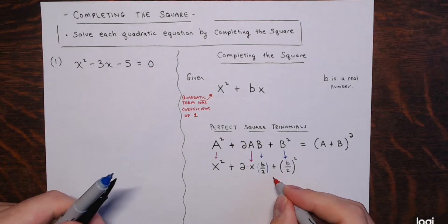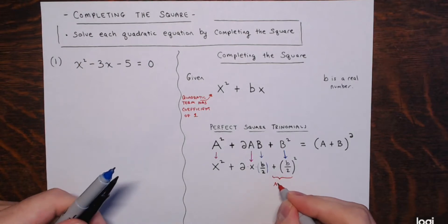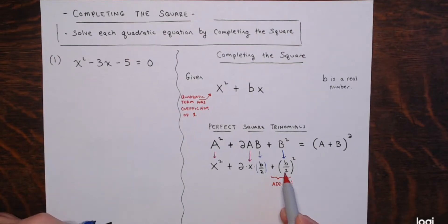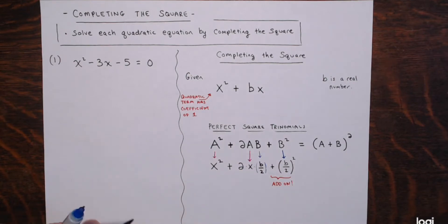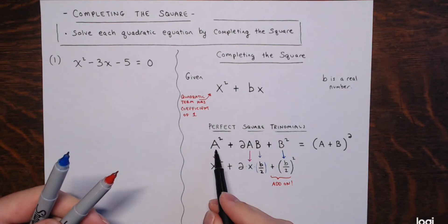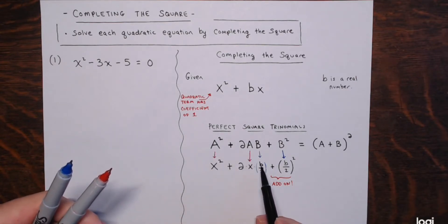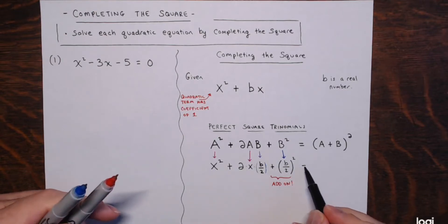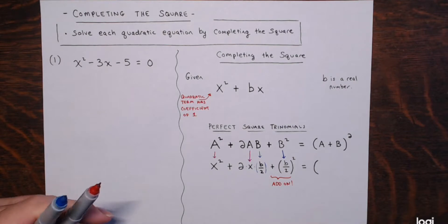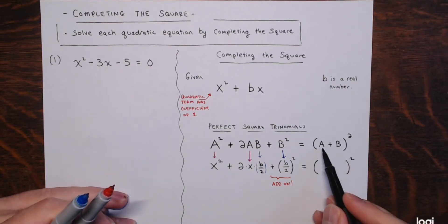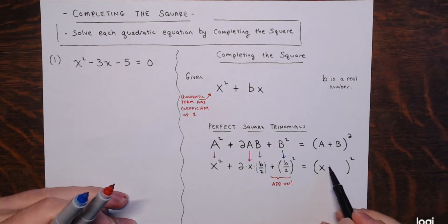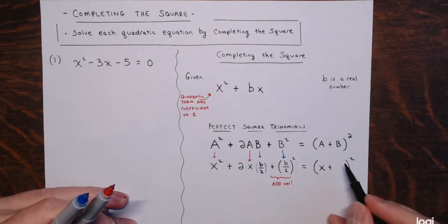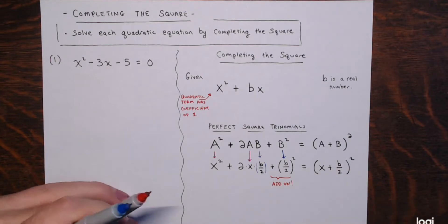Once (b/2)² is added onto our quadratic and linear terms, we have a perfect square trinomial of the form x² + 2·x·(b/2) + (b/2)², which we can express as the quantity (x + b/2) squared. So x acts like a, and b/2 acts as capital B.